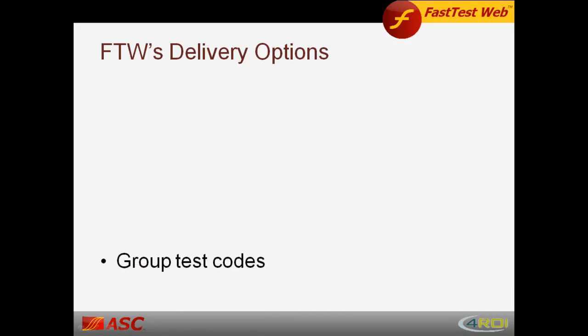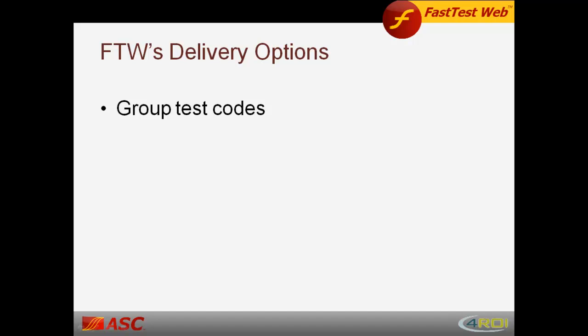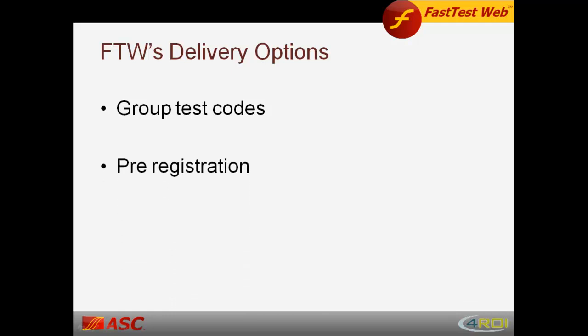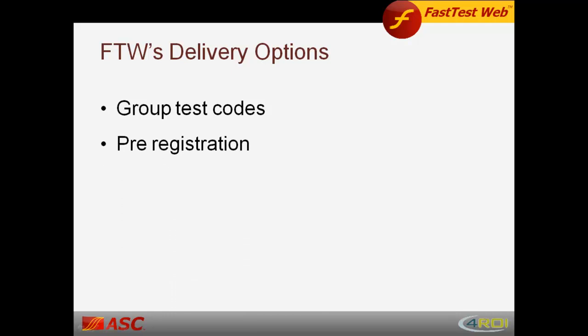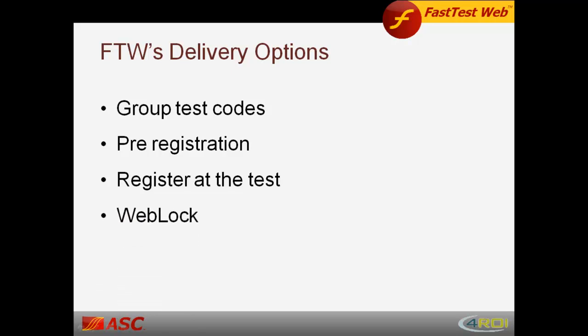FastTestWeb delivery options. Group test codes enable examinees to register themselves and are connected to a test, examinee group, and registration parameters. Pre-registration allows you to upload a list of examinees or enter them in one at a time. The Register Test option allows you to provide a link for your test and the examinee can register at the time of the test. WebLock enables the examinee's computer to be locked so they will not have access to any other files, tools, or internet once WebLock is enabled. After the test, WebLock can be disabled, allowing for greater security over the test.